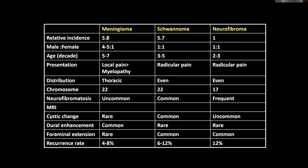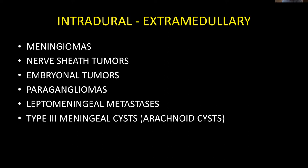For the most part we're seeing benign tumors — mostly schwannoma, meningioma, neurofibroma. These patients are sometimes picked up incidentally. Neck pain and low back pain are pretty common; patients may get worked up with plain x-rays or anti-inflammatory medications. When symptoms persist and someone starts having numbness, pain in an arm or leg, subtle signs of imbalance, difficulty walking, or impaired fine motor coordination, they'll often get an MRI. If there is suspicion for a lesion, patients will have a repeat MRI with contrast.